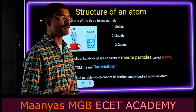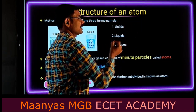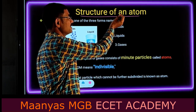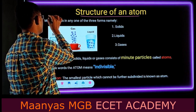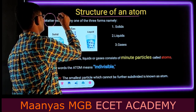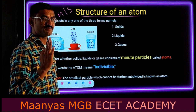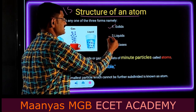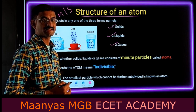Dear students, now I am going to discuss about the structure of the atom. Before defining the structure of the atom, let us know about matter. Matter, or material or substance, is available in three forms: the first one is solids, the second one is liquids, and the third one is gases.